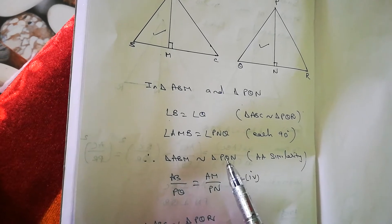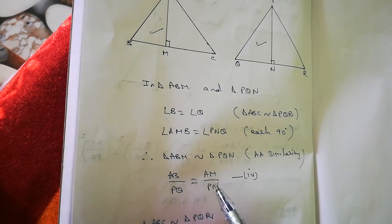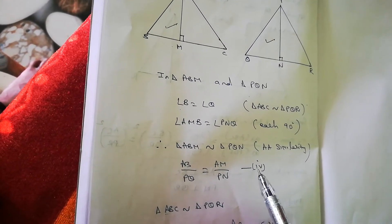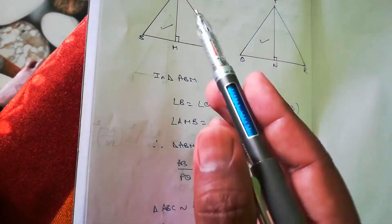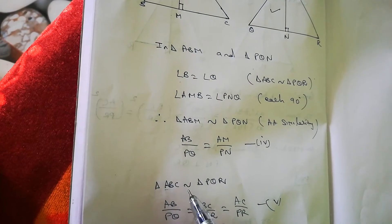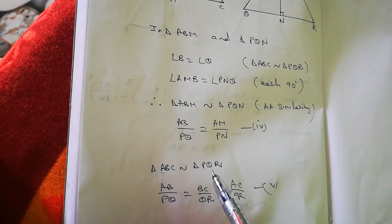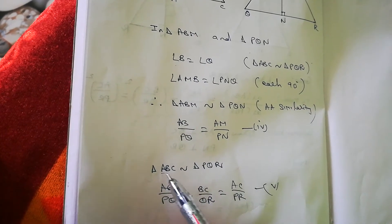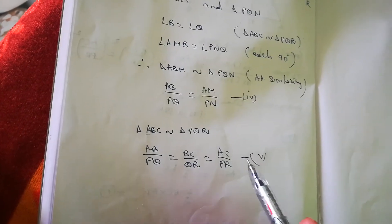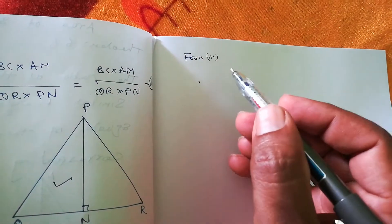Since triangle ABM is similar to triangle PQN, we get AB/PQ = AM/PN. We take AM/PN as equation four. For the whole triangles ABC and PQR, which are given similar, the corresponding sides are equal: AB/PQ = BC/QR = AC/PR. This is equation five.